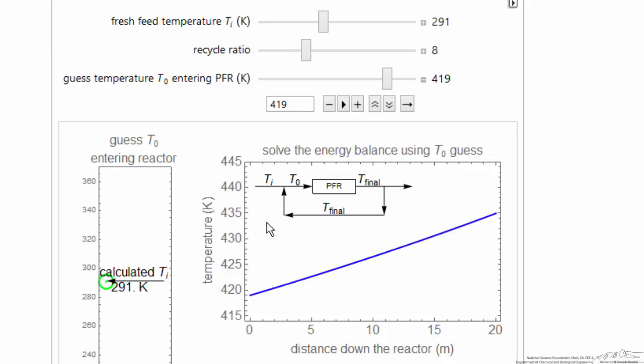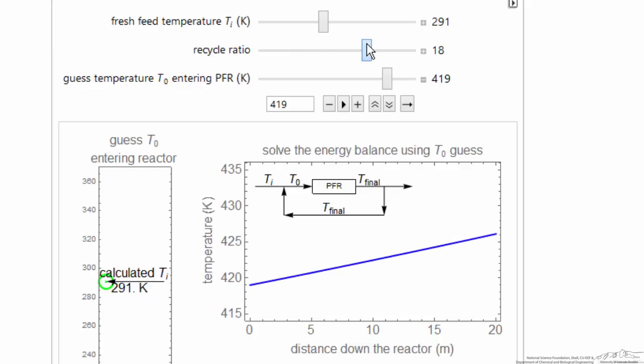One thing that's possible, let's look at a condition where I already know this is going to happen. If I have the feed temperature, and it happens at a number of conditions, let's look at solving for the case where we have recycle ratio of 19 and feed temperature of 300 Kelvin.